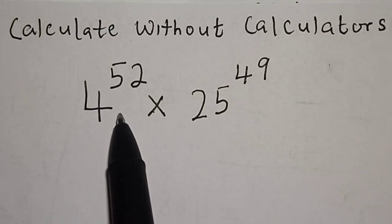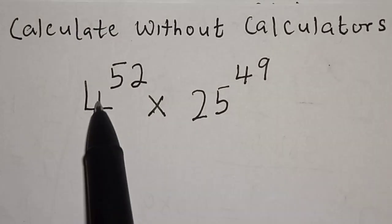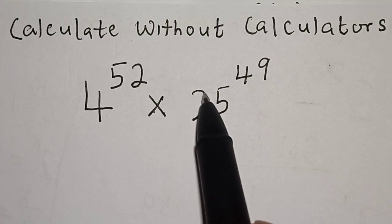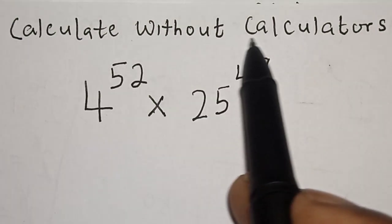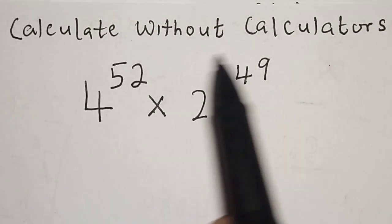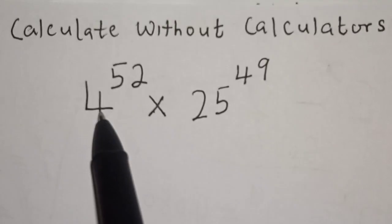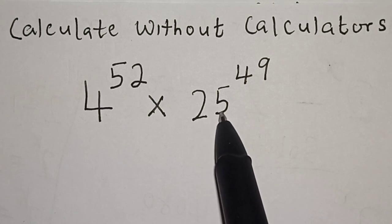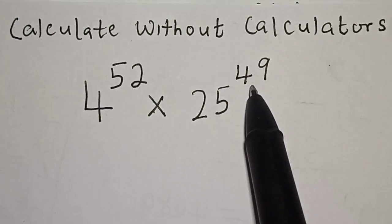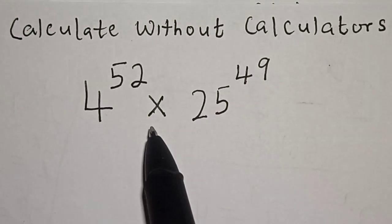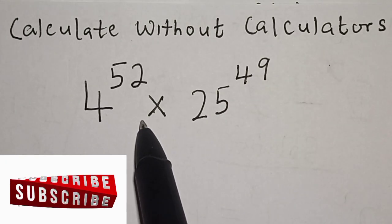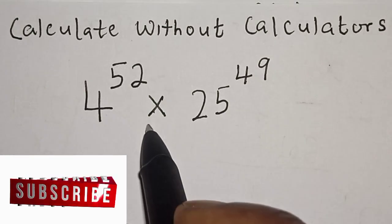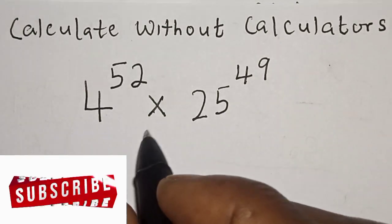Hello, welcome to Math Gist. In this class we want to calculate this math problem without using calculators: 4 raised to power 52 multiplied by 25 raised to power 49. But before we move on, like, share, comment and subscribe.